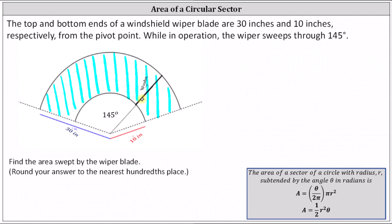We're asked to find the area swept by the wiper blade, and we're told to round to the nearest hundredth or two decimal places. To find the area of the shaded region, we'll find the area of the sector with a radius of 30 inches, and then subtract the area of the sector with a radius of 10 inches, which will leave us with the shaded area.